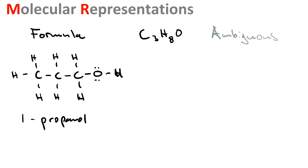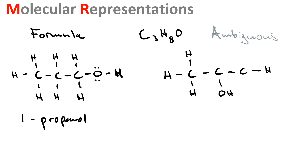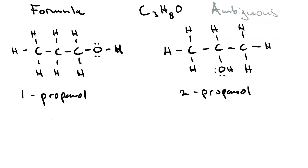We could also make the hydroxyl group a side chain — this one is called 2-propanol. So 1-propanol and 2-propanol. And if we did 3-propanol, that would be the same as 1-propanol, just flip the molecule over.